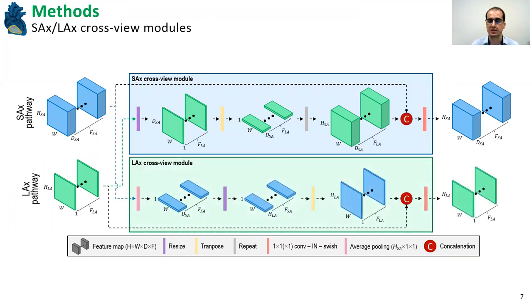In the long axis cross-view modules, the same principle applies, but now applying an average pooling over the height dimension of the short axis feature maps, followed by resizing and transposing before the convolution and one by one 2D convolution. So this new set of features are then used on the expansion path. However, for this approach to be effective, the feature maps and therefore the input images must have a spatial correspondence, a pixel to pixel spatial correspondence. And in order for this to be true, both images must cover the same physical space.